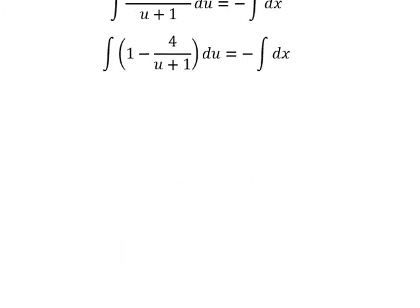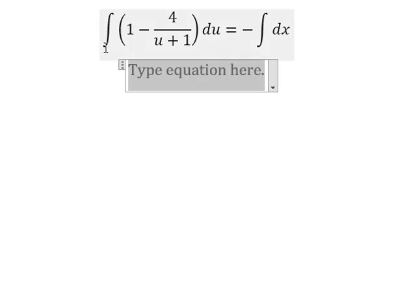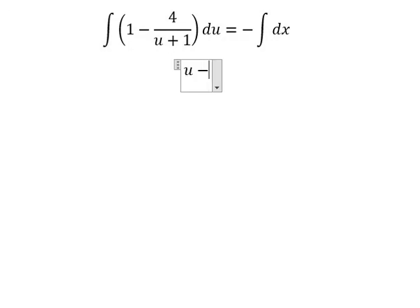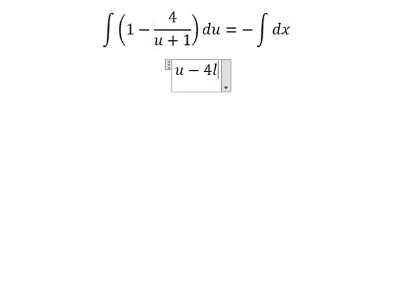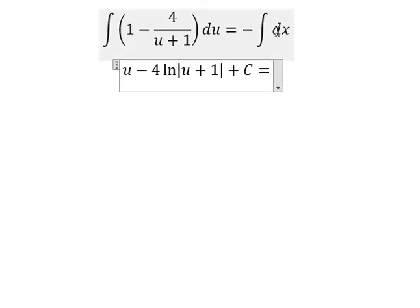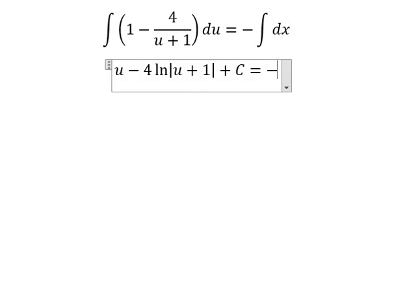Now we have the final answer. The integration of 1 gives us u. The integration of this one gives us 4 ln of the absolute value of u plus 1, and I will add c. The integration of x gives us x.